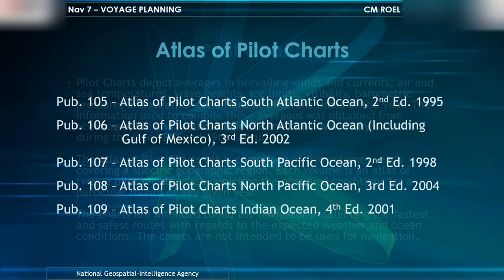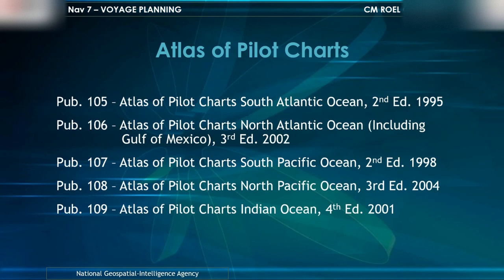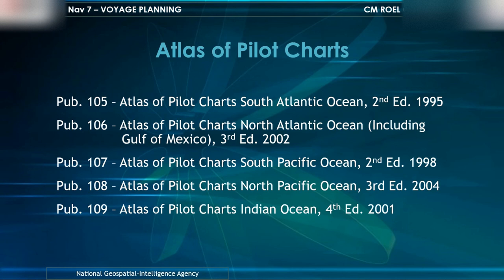The Atlas of Pilot Charts publications include: Publication 105, South Atlantic Ocean, 2nd Edition 1995; Publication 106, North Atlantic Ocean including Gulf of Mexico, 3rd Edition 2002; Publication 107, South Pacific Ocean, 2nd Edition 1998; Publication 108, North Pacific Ocean, 3rd Edition 2004; and Publication 109, Indian Ocean, 4th Edition 2001.